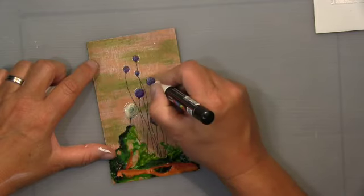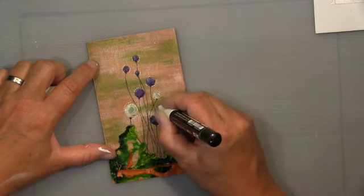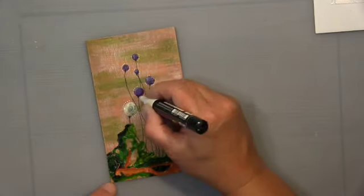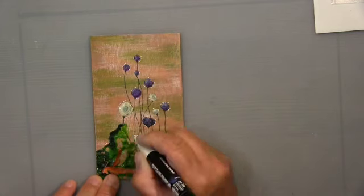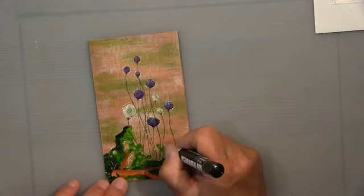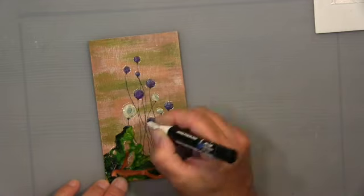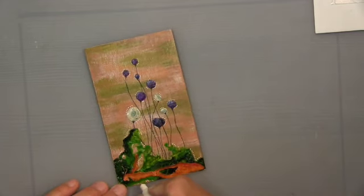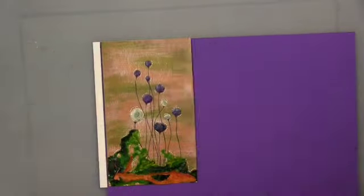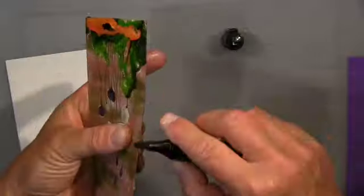I'm using here the white posca to get some dots here and there around the flowers and on the bottom as well. I think that puts a bit of interest in. I'm not doing a lot more because I didn't want to overdo it. It should stand for itself, you know, no stamping, nothing.